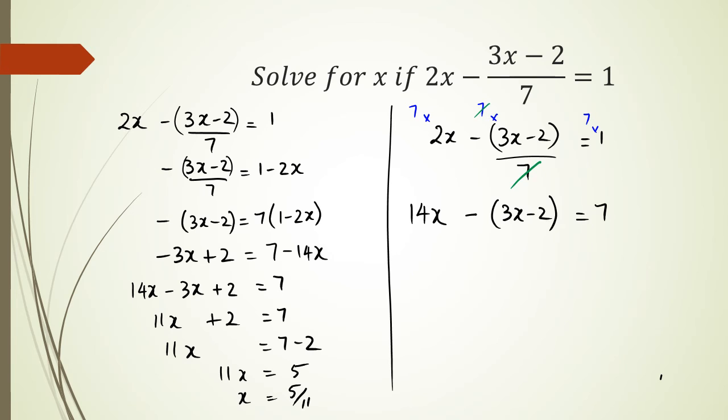What I'm left with is 14x - (3x - 2) = 7. Expanding this bracket, I get 14x - 3x + 2 = 7, so 11x + 2 = 7. As you can see, I'm working with the same thing on the left hand side, so 11x = 5 and x = 5/11. Same answer, two different methods.